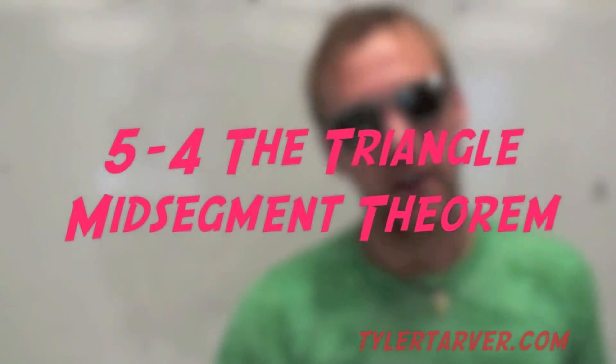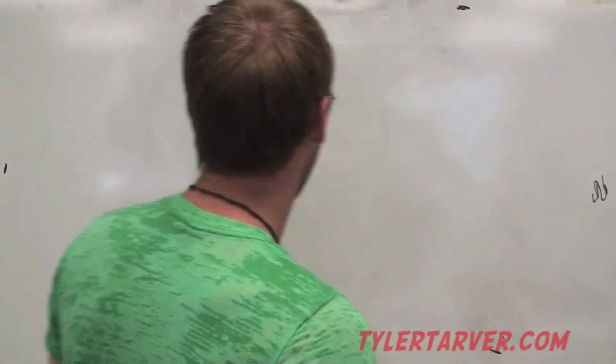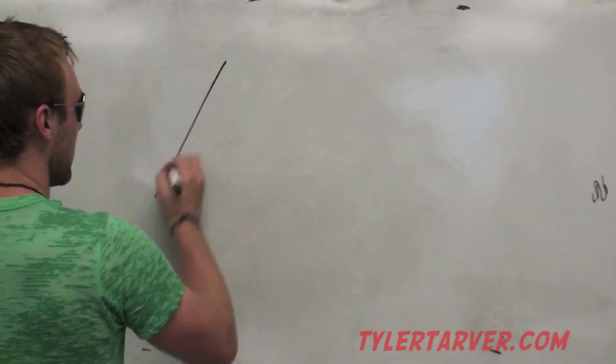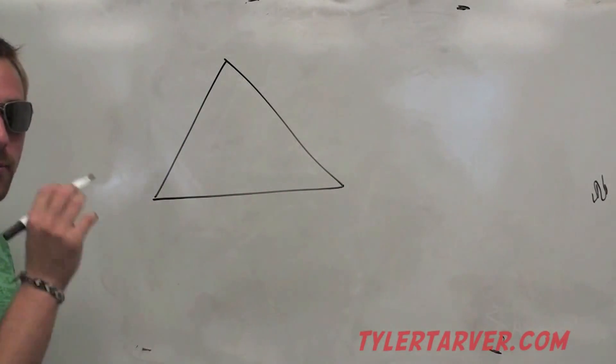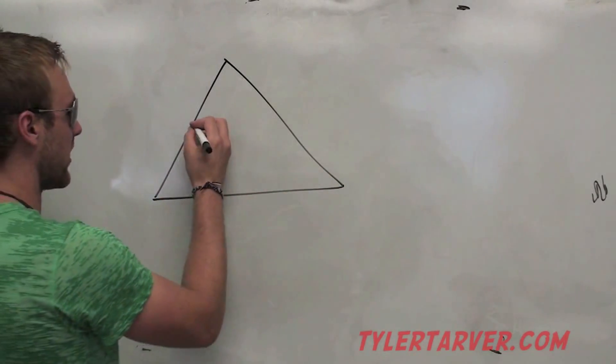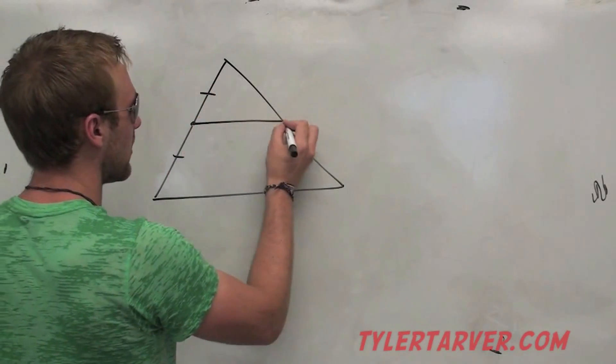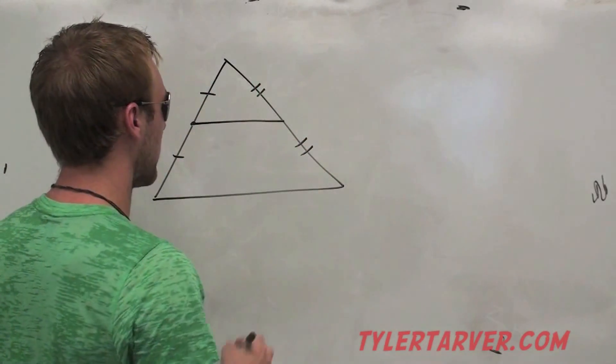5-4, triangle mid-segment theorem. Triangle mid-segment is exactly what it sounds like. You have a triangle, and then you have a segment that goes from the middle of one side to the middle of the other side. It means it cuts that in half, cuts that in half.